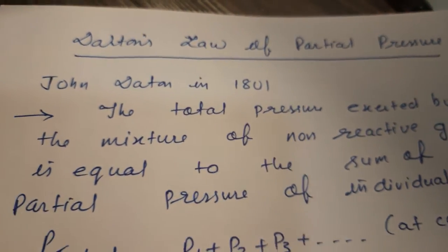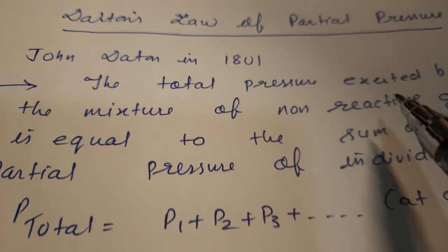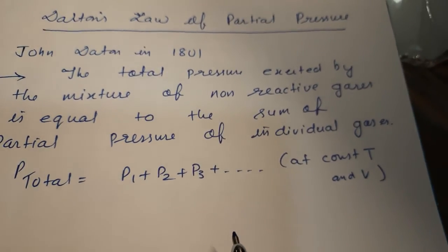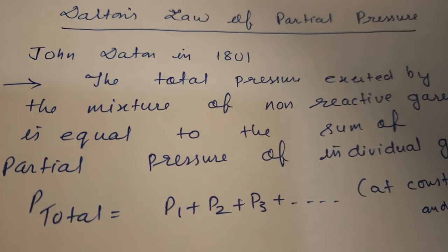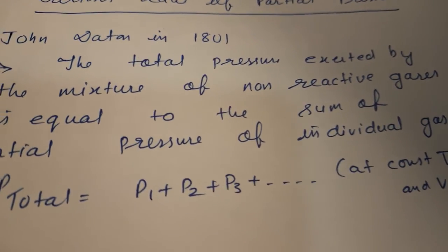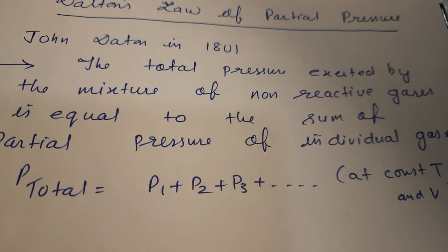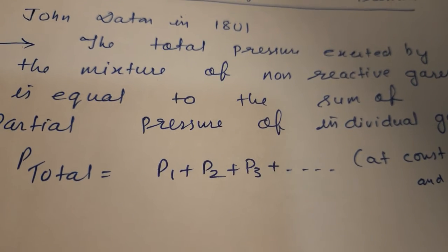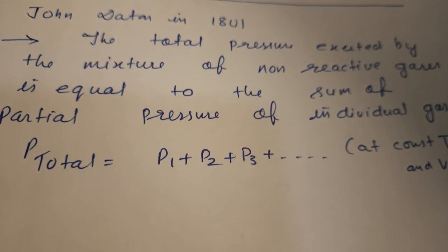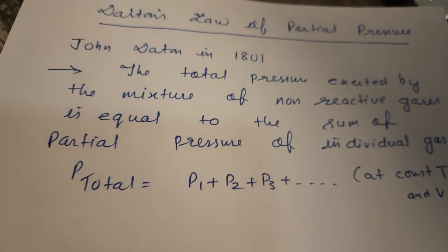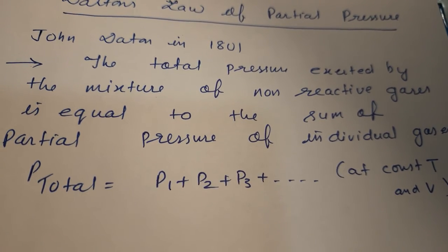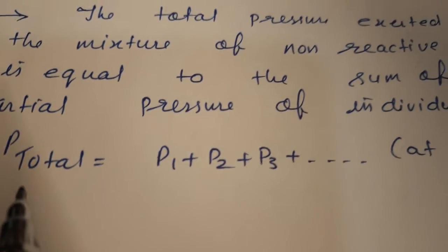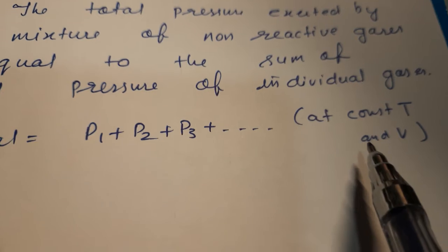Dalton's Law of Partial Pressure is very easy. John Dalton in 1801 said that the total pressure exerted by a mixture of non-reactive gases is equal to the sum of partial pressures of the individual gases. If gas one has pressure P1, gas two has pressure P2, and gas three has pressure P3, then the total pressure at constant temperature and volume equals P1 plus P2 plus P3, and so on.